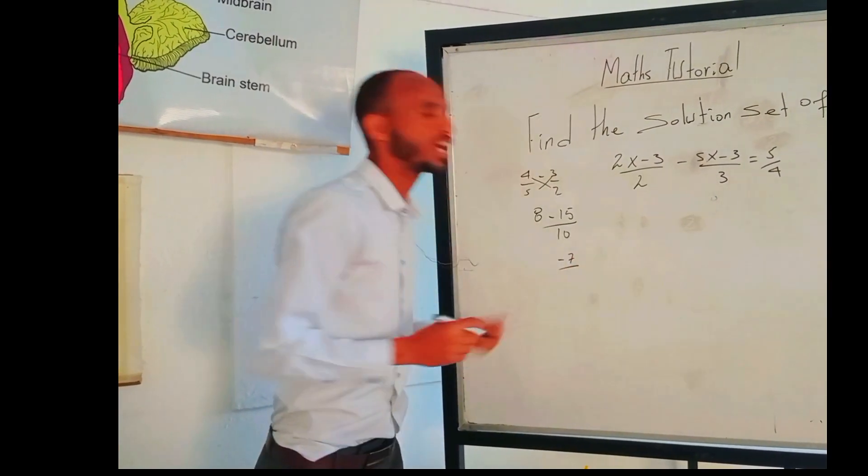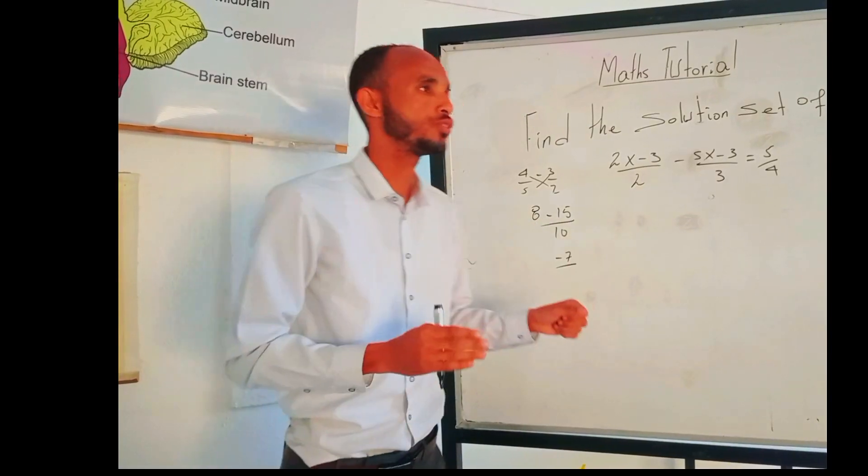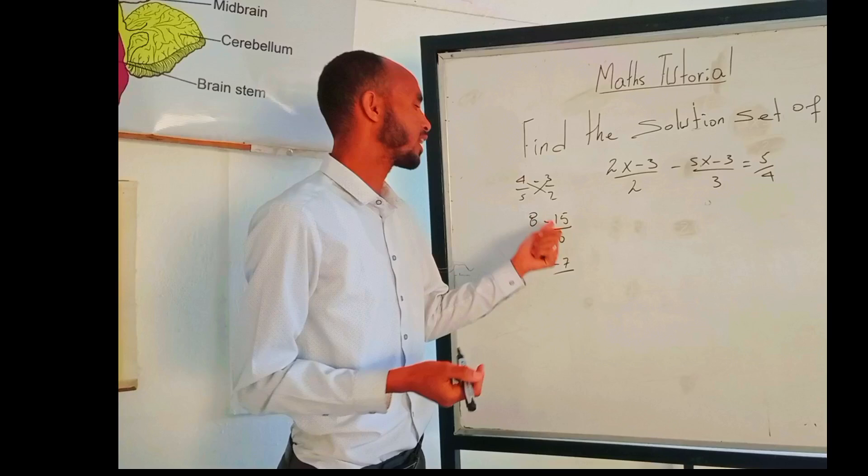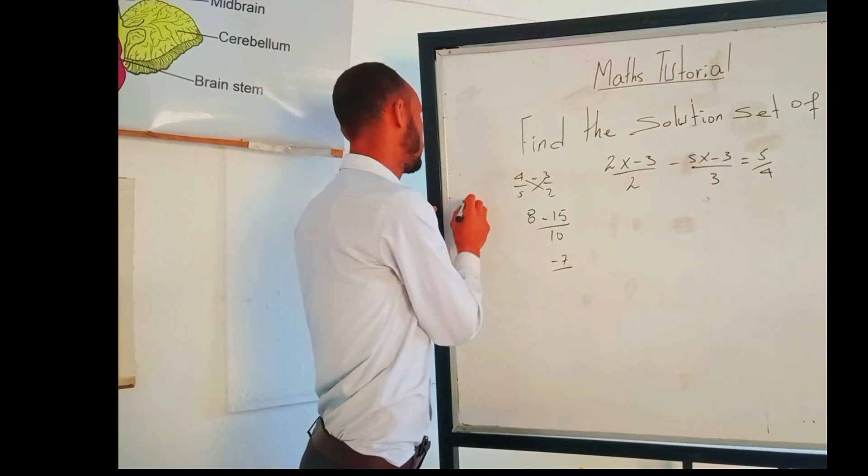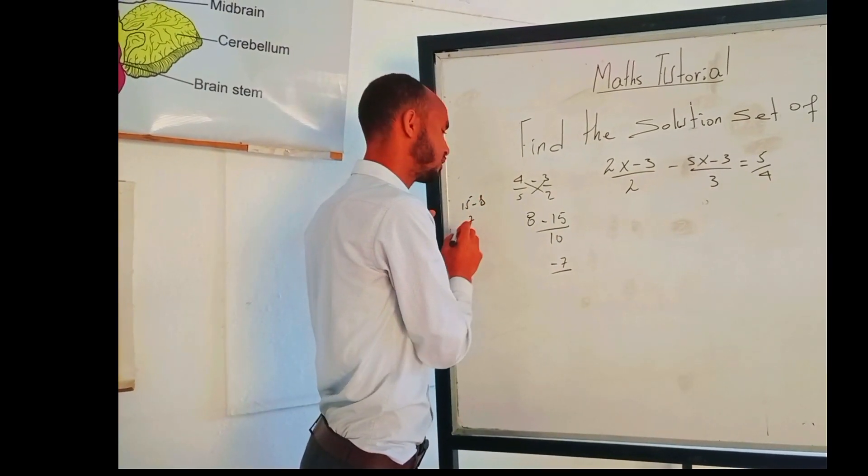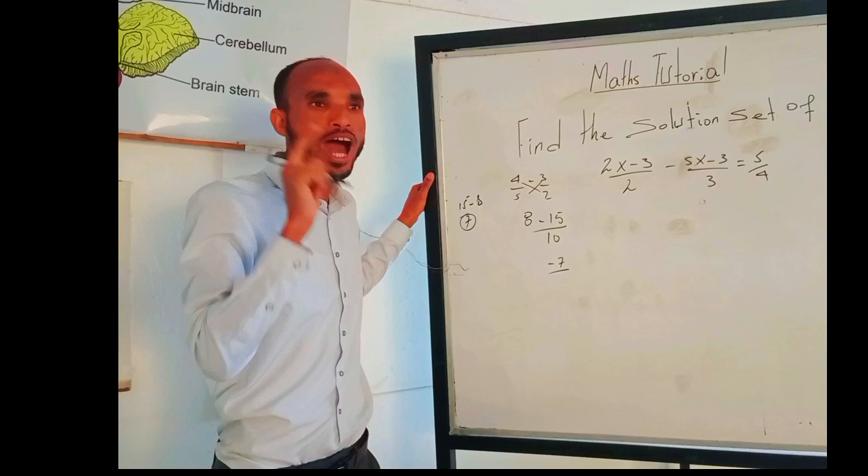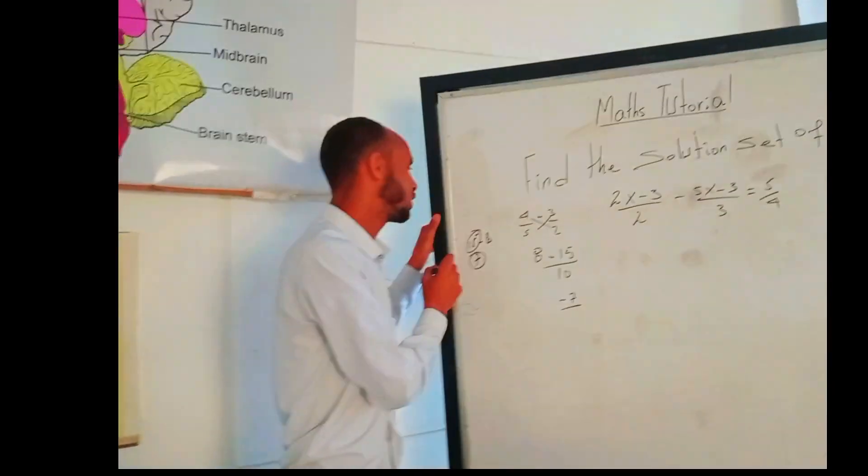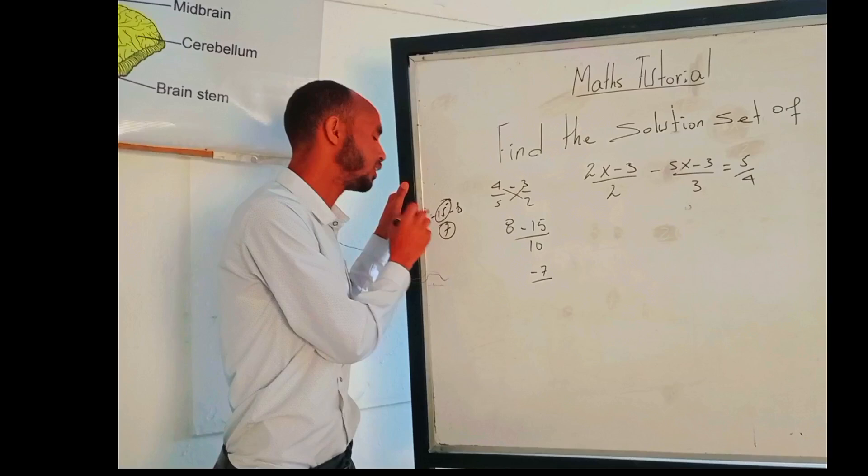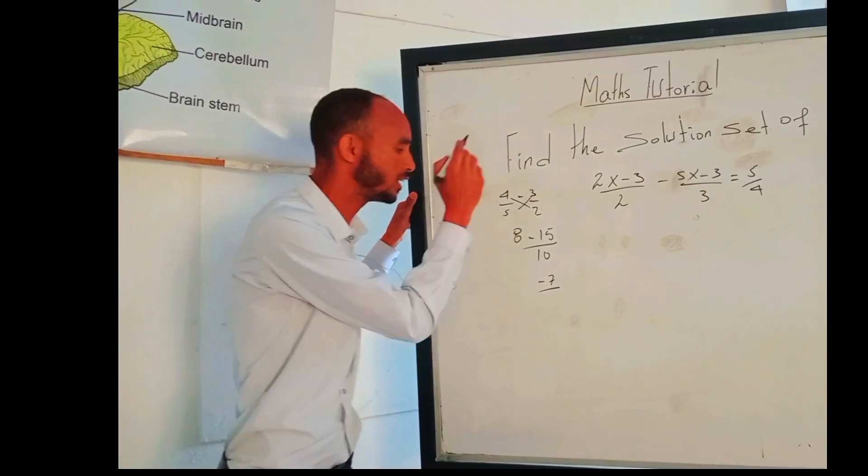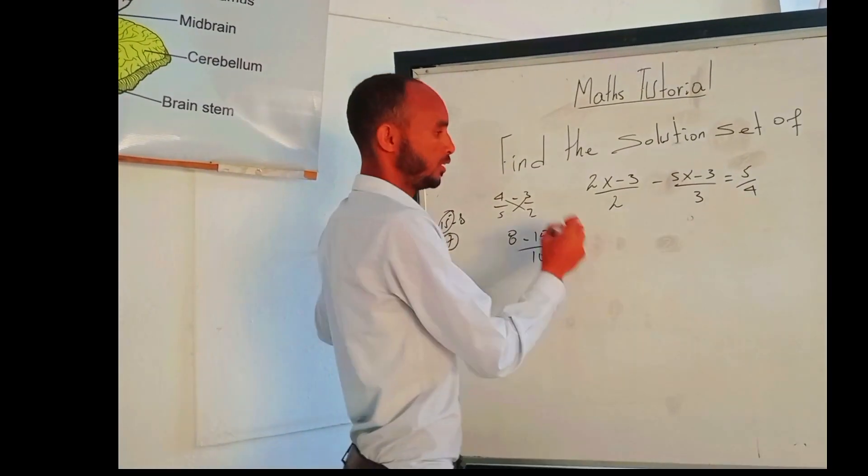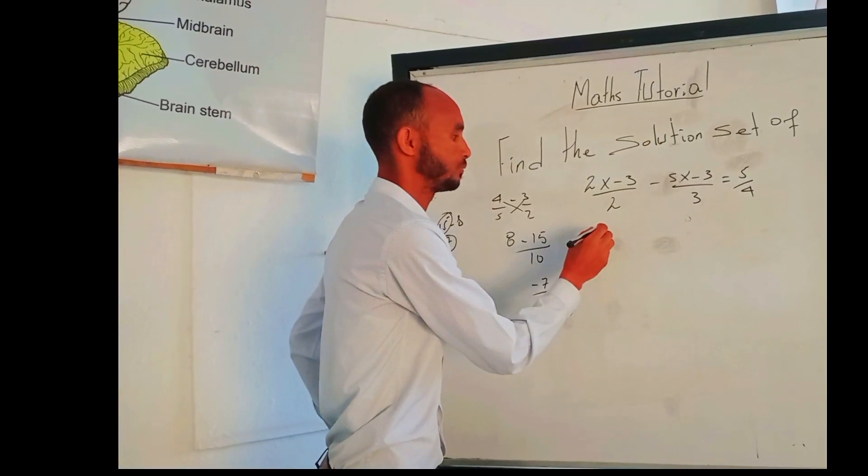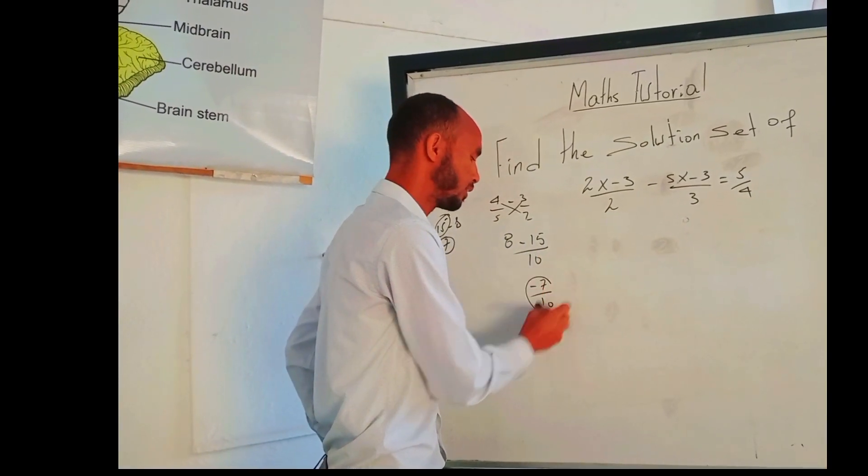Why the reason is negative 7? As you know, the rule of addition with different signs. First, subtract the numbers: 15 minus 8 is 7. Now, you are looking at the greater number sign. The greater number sign is negative, so put the negative sign, then the whole over 10. The answer is negative 7/10.